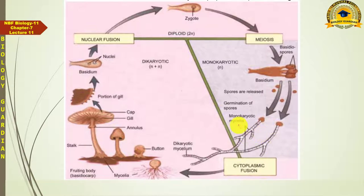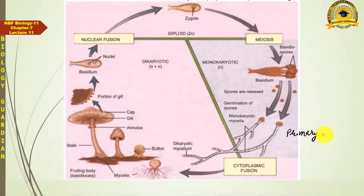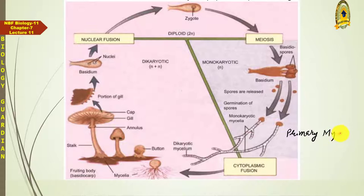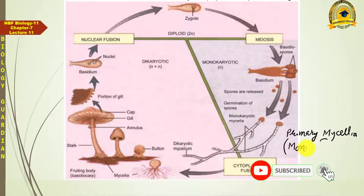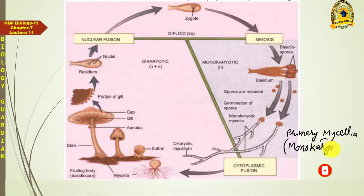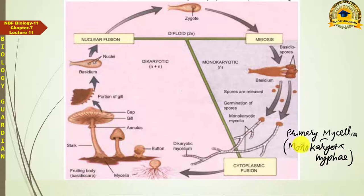As a result of germination of these spores, mycelia consisting of monokaryotic hyphae originate, and such mycelia are called primary mycelia. So these primary mycelia are developing here — consisting of monokaryotic hyphae — which is why mycelium with monokaryotic hyphae is called primary mycelium.